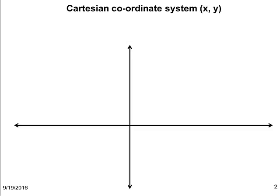Conventionally, the horizontal axis is called the x-axis and the vertical axis is called the y-axis. The point of intersection of axes is called the origin.